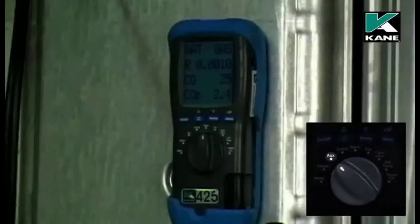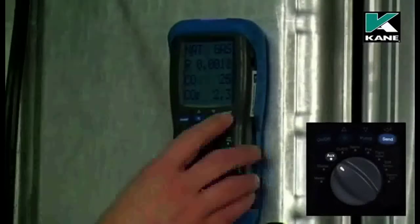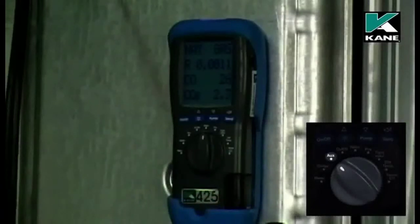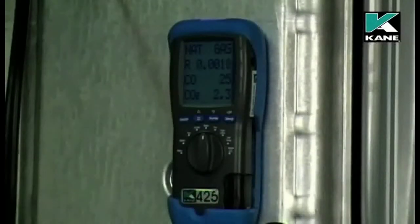Combustion readings can also be logged by pressing the send button for two seconds. The log number is briefly displayed on the top line. These readings have been stored as log number 8. The memory can store up to 99 combustion readings. Logged readings can be viewed and printed via the menu.